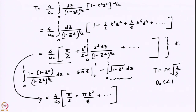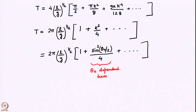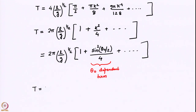However, as theta_0 increases, you will actually need to take into account corrections. The first correction has a coefficient k squared. This tells us an important generic feature of nonlinear oscillators: the time period of motion actually depends on the initial perturbation amplitude. So T is not just a function of l and g as linear theory would tell us, but it is also a function of theta_0.